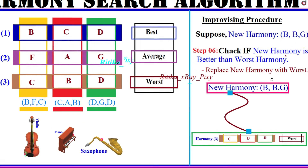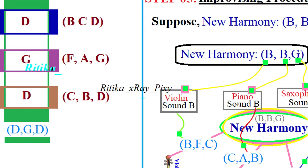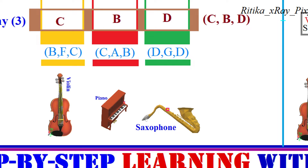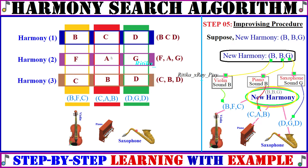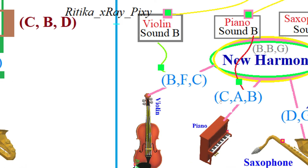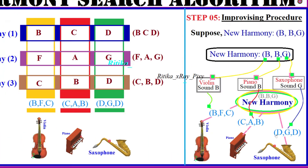In step five, we generate a new harmony. The new harmony generated is B B G. Using the existing harmonies, for the first instrument with sounds B F C, sound B is taken. For the second instrument with sounds C A B, sound B is taken. For the third instrument with sounds D G D, sound G is taken. So the new harmony is B B G.